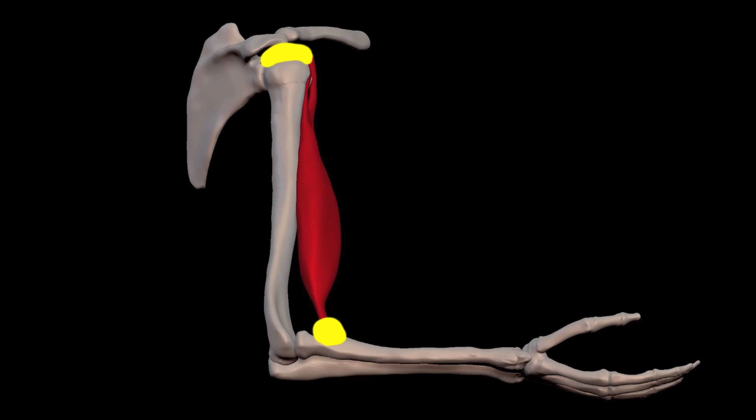When the muscle is activated, it is shortened, and so it pulls the forearm up. So if we know where a muscle is attached, we know what kind of action it does.